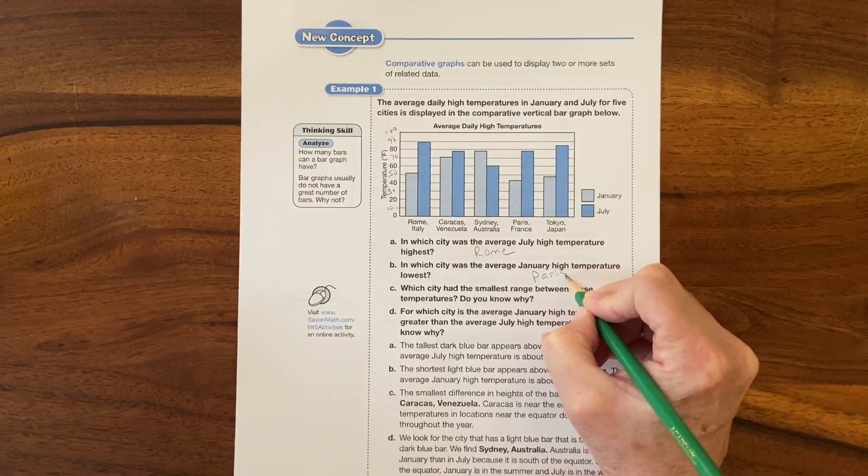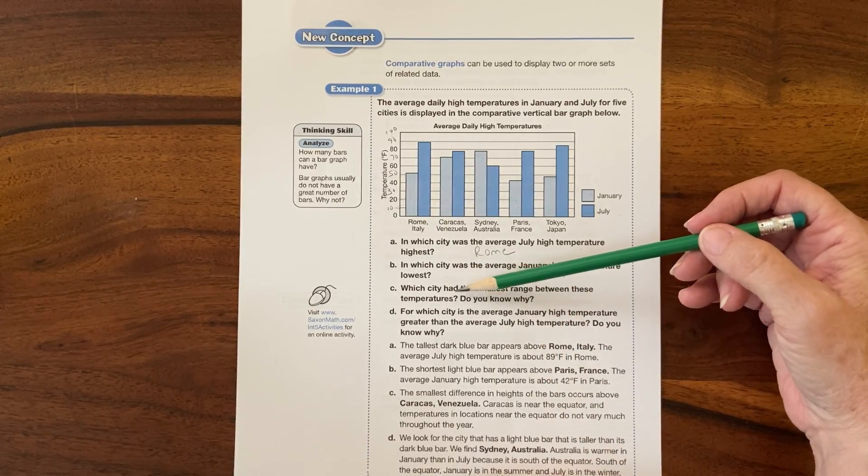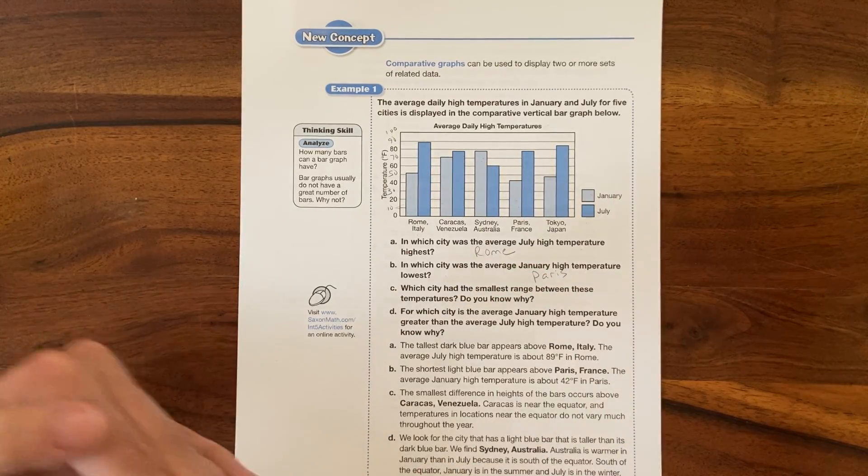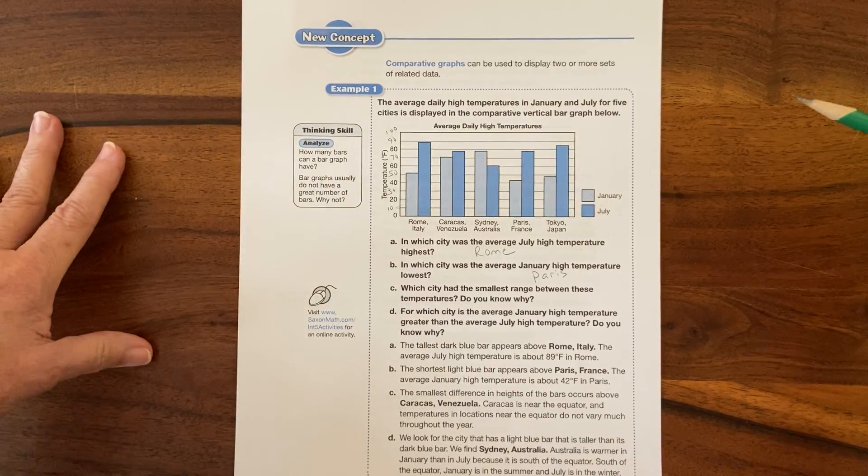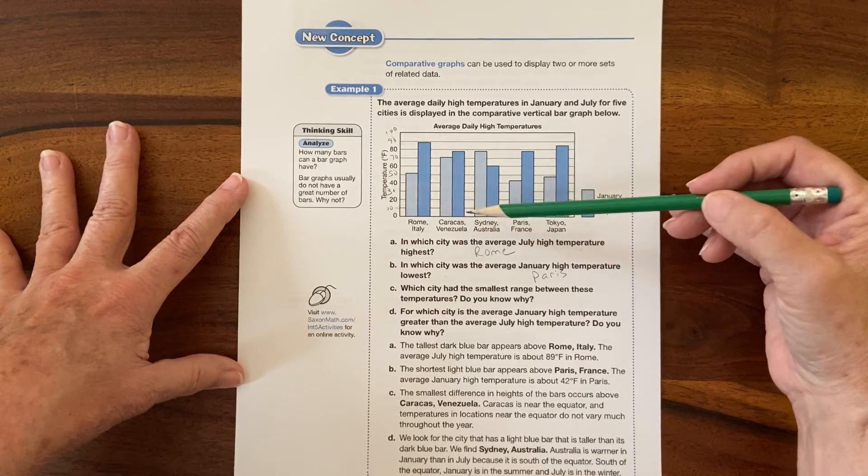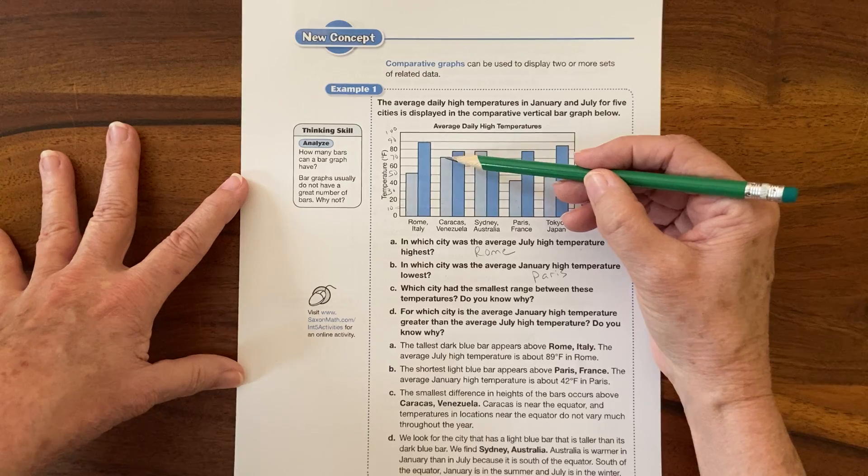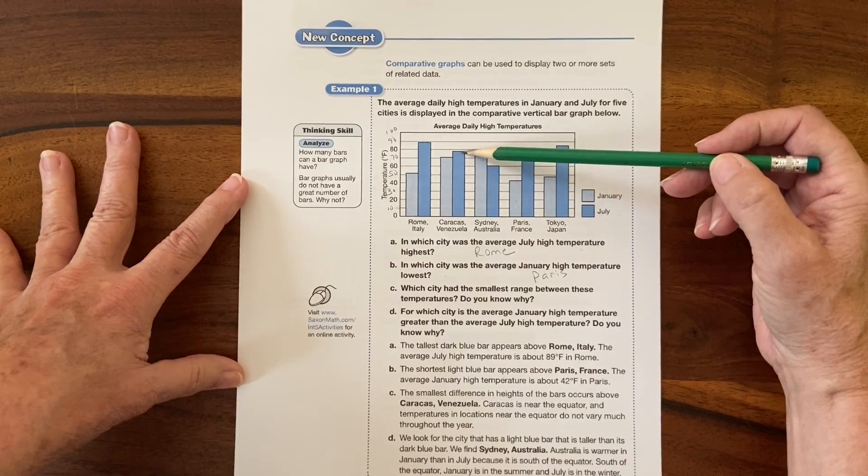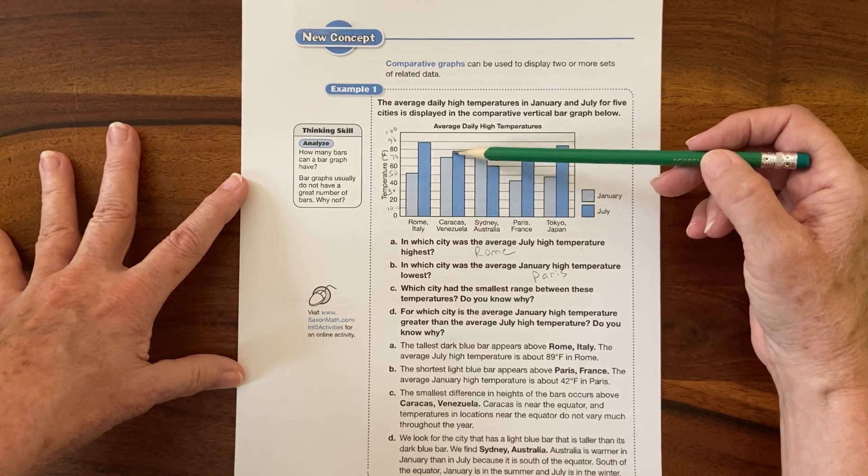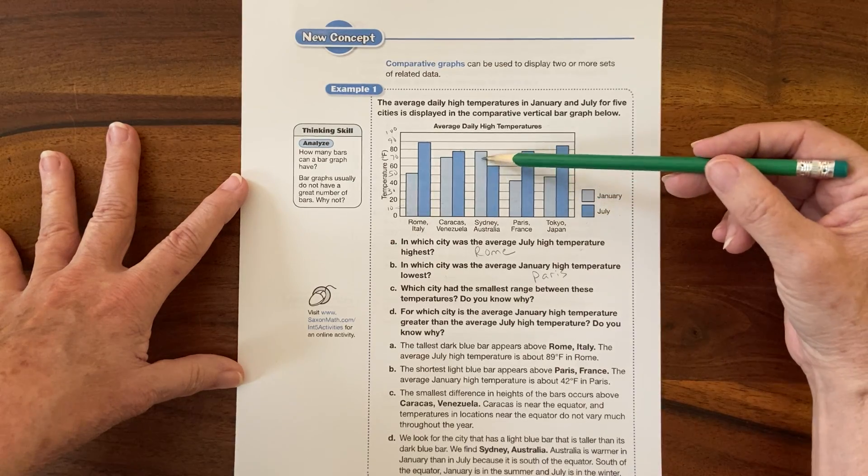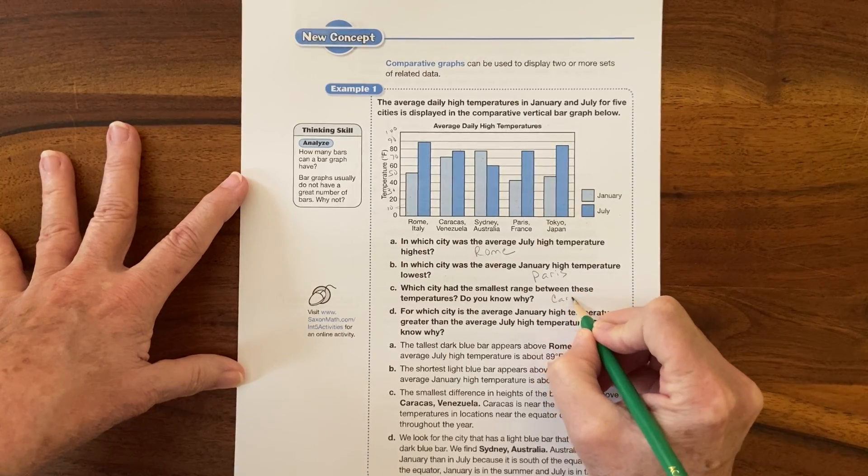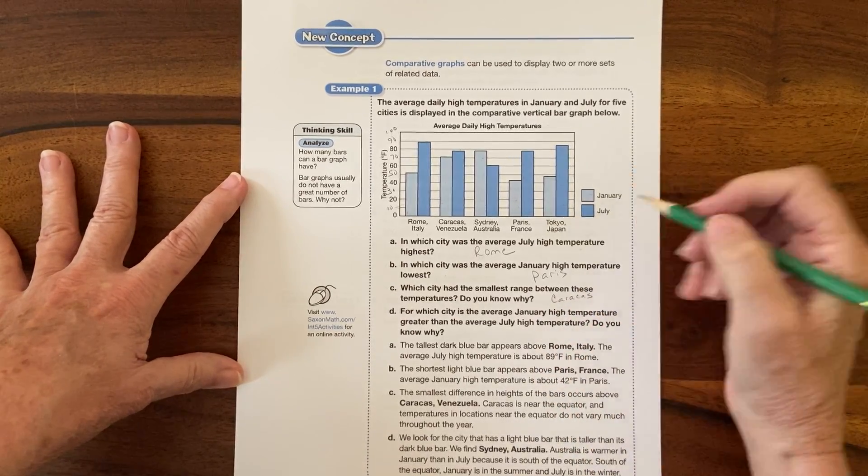Which city had the smallest range between those temperatures? So we're looking for where those bars are almost at the same spot, where the temperature doesn't change very much. Let's look in Venezuela - Caracas. It's 70 in January and not quite 80 in July, so it's not even 10 degrees difference in temperature. Everywhere else it's a pretty good amount of difference. So I'm going to go with Caracas.